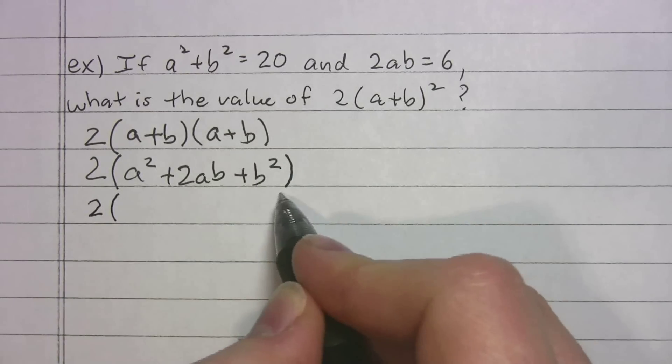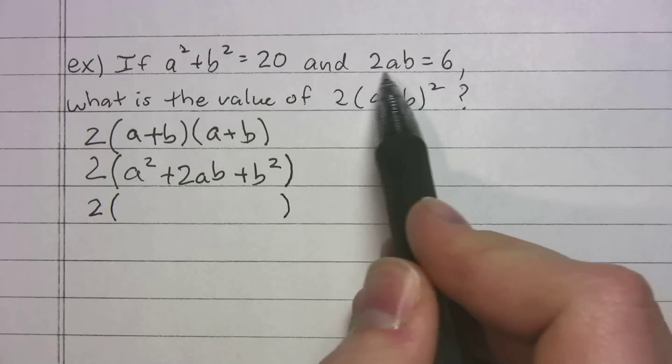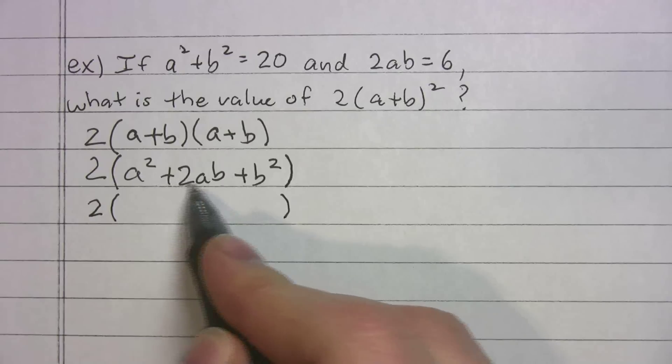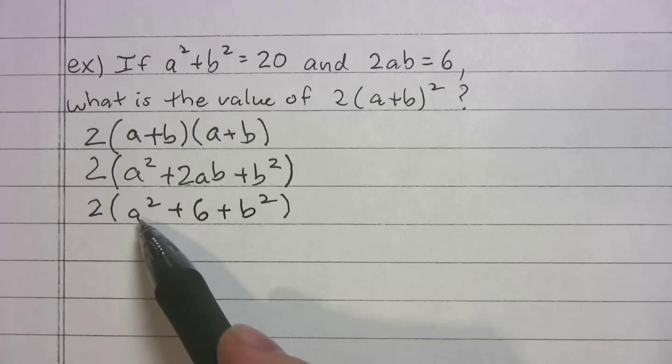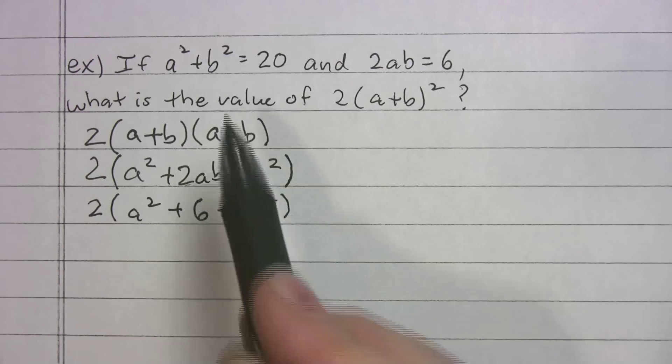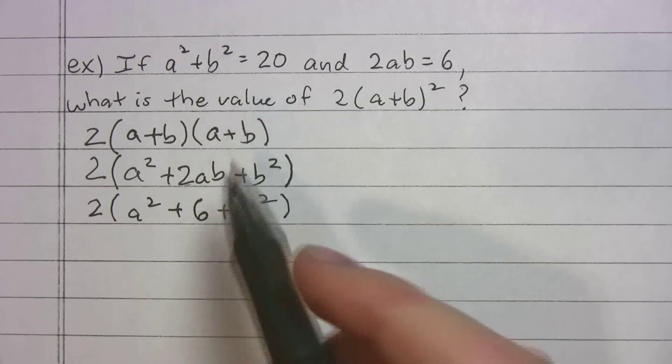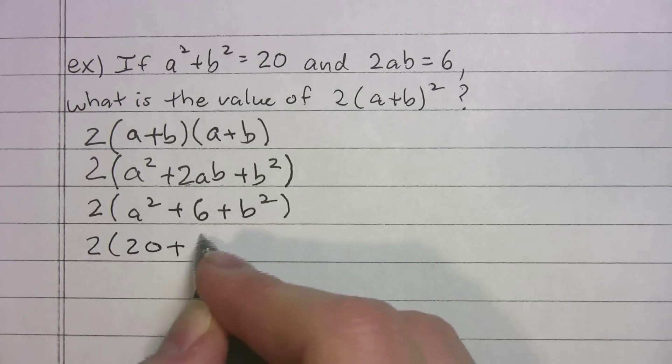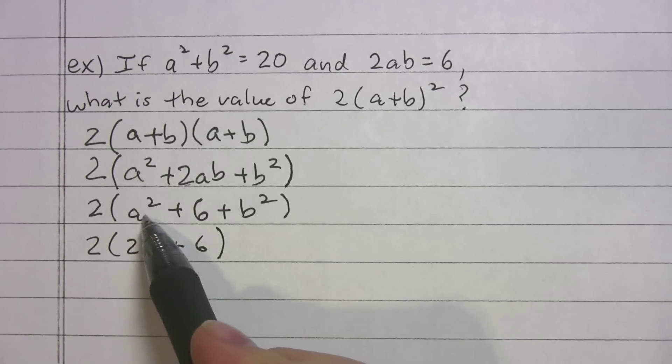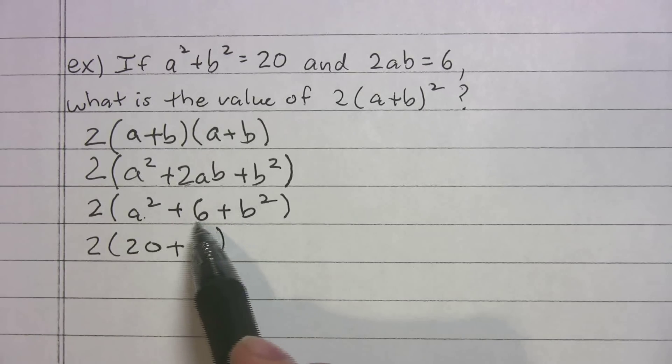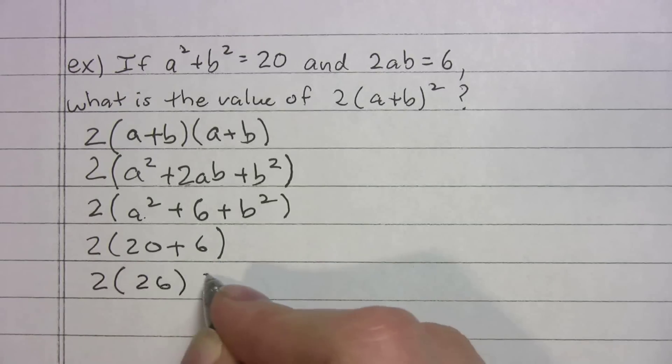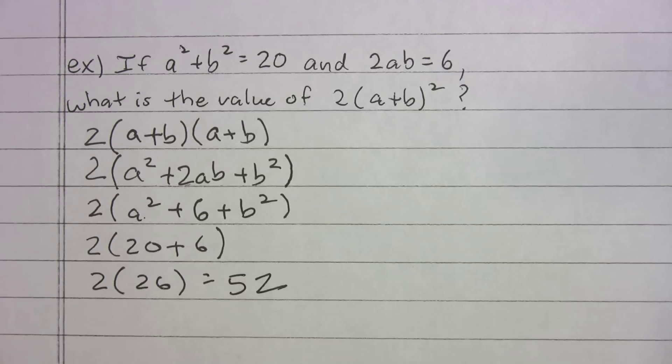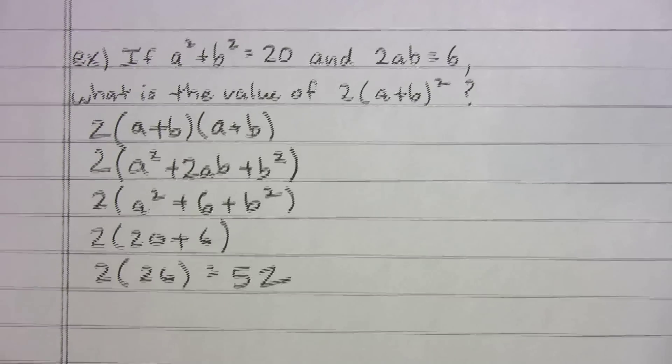That's going to be 2 times, so what can we pop in now? We said 2ab equals 6, right? There's 2ab. I'll put 6 there. Now the nice thing is I have a squared plus b squared. Well, that's from before. a squared plus b squared equals 20. So I can write in 20 plus 6. It looks a little confusing because the a squared and the b squared are separated by the 6, but since this is addition, you can just move things around. We get 2 times 26, which is equal to 52. I'm happy I showed that one to you because it's not your typical problem.